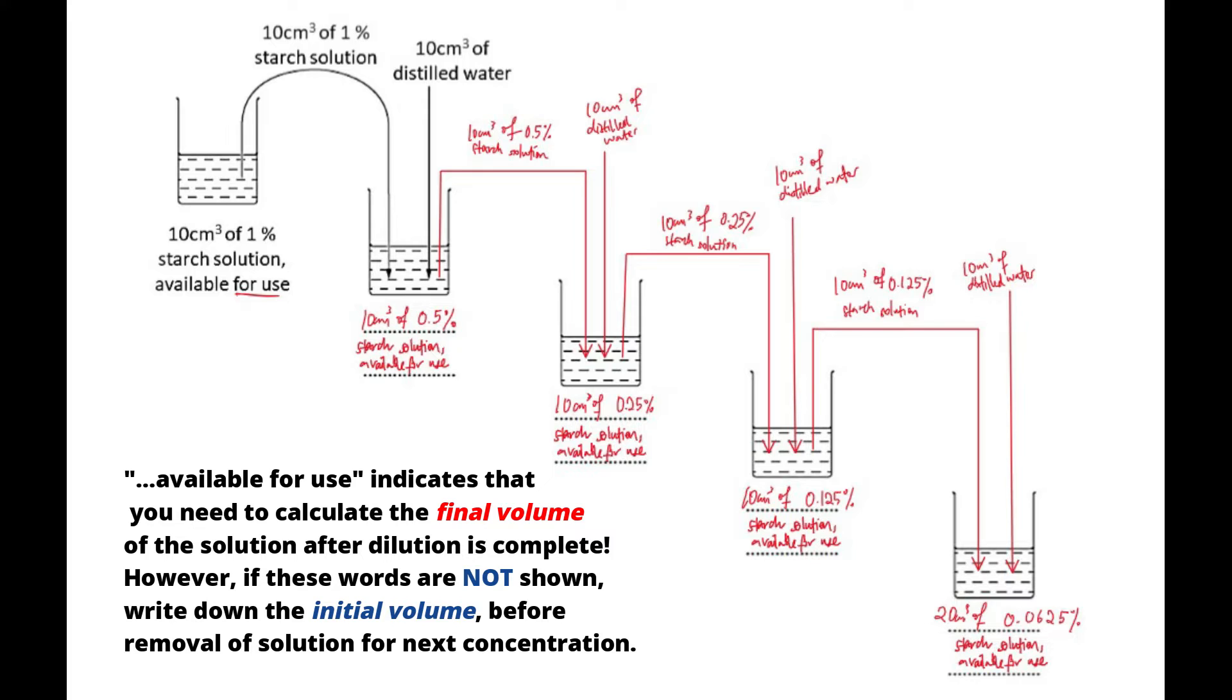This procedure is repeated for each consecutive concentration until 0.0625%. We can see here at the last beaker, because it's the final concentration, no more solution is removed from the beaker, and therefore, it's just 10 plus 10 cm³, and this results in 20 cm³ of 0.0625% starch solution available for use.